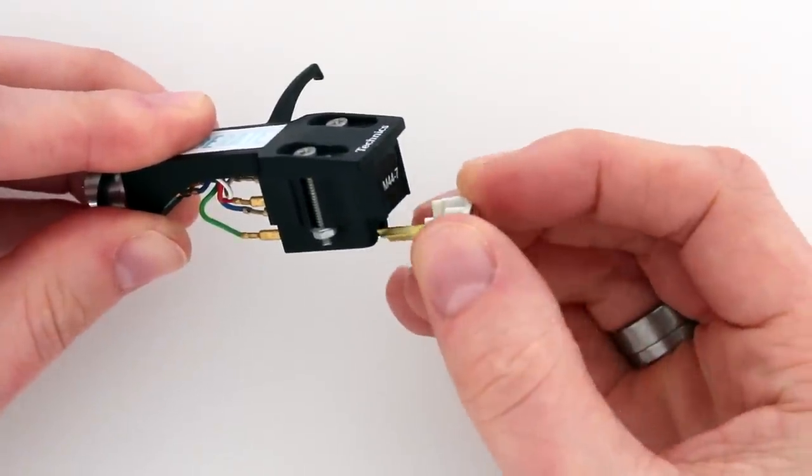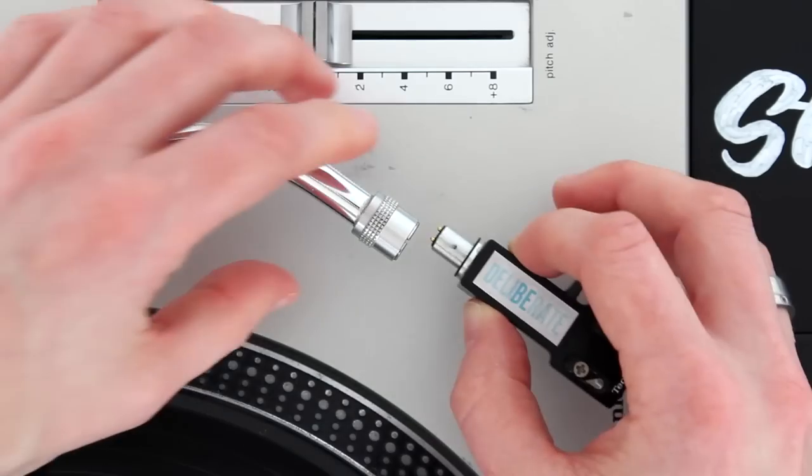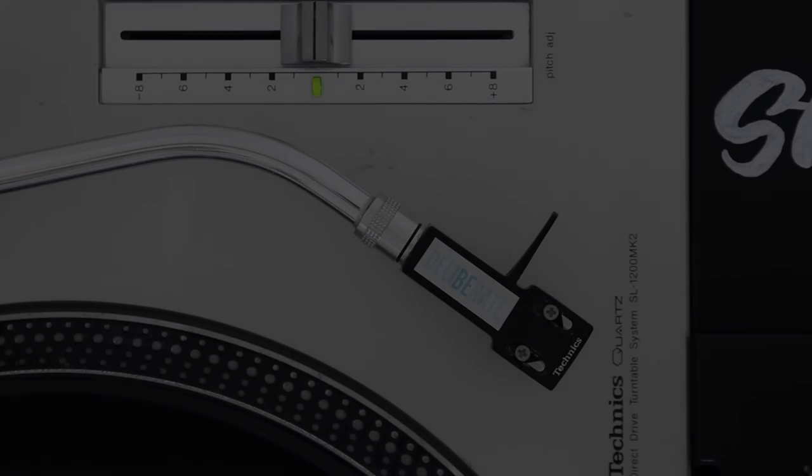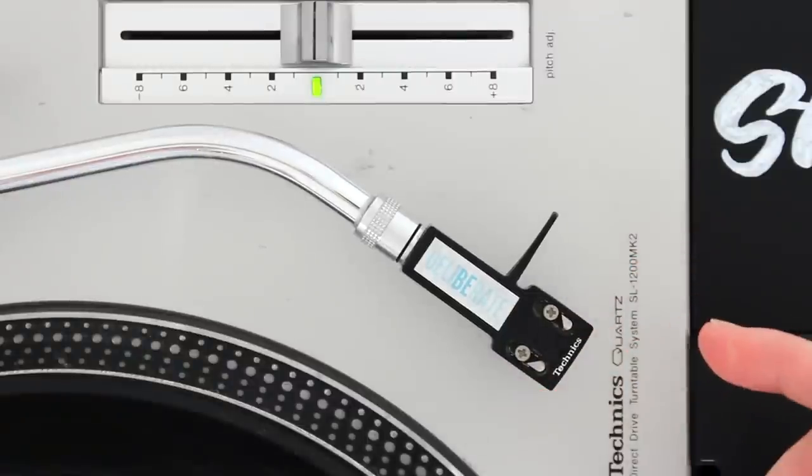Next you just insert the stylus, and then finally you just screw the head shell into the tonearm. I'll show you how to set them up for skip-free scratching in a different video.